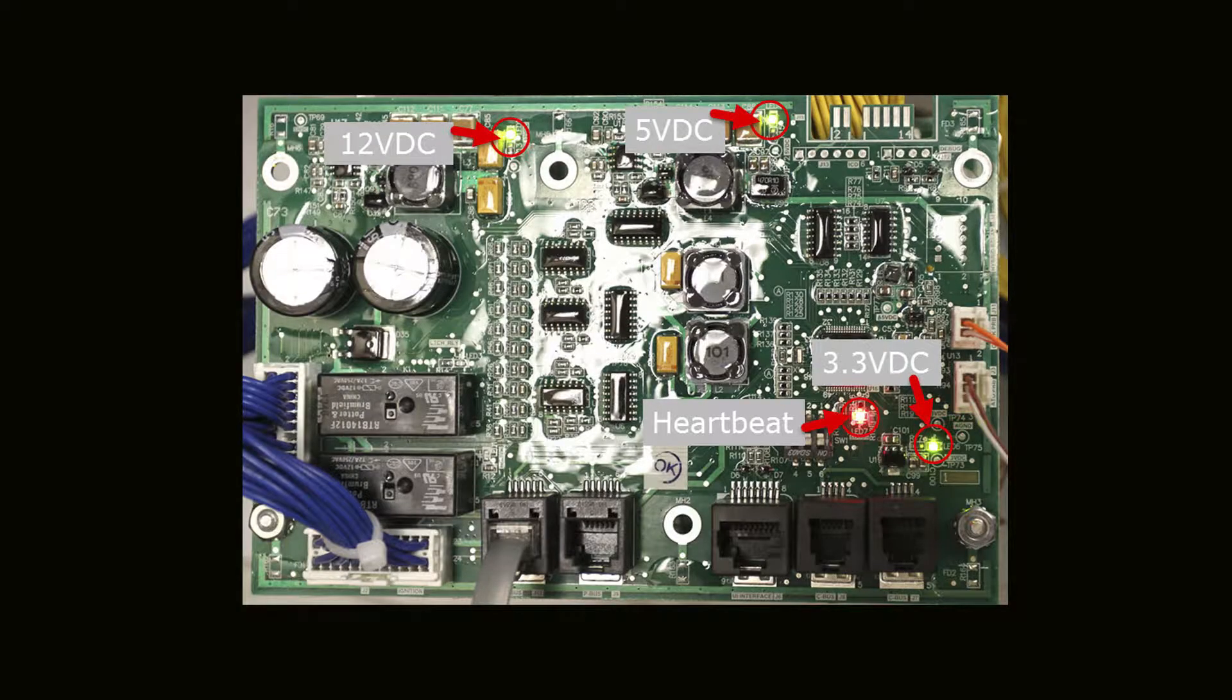The board creates DC voltage for other components: 12 VDC for heat and latch relays, 5 VDC for sensing circuits, and 3.3 VDC for the CPU. Illuminated LEDs indicate voltage in those circuits.